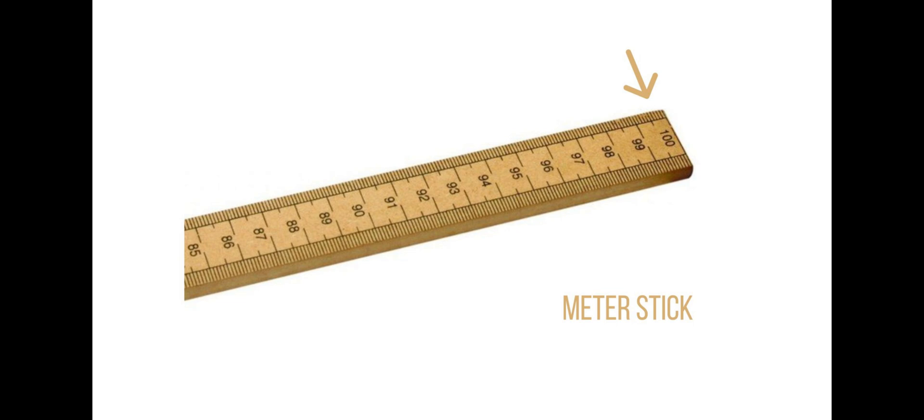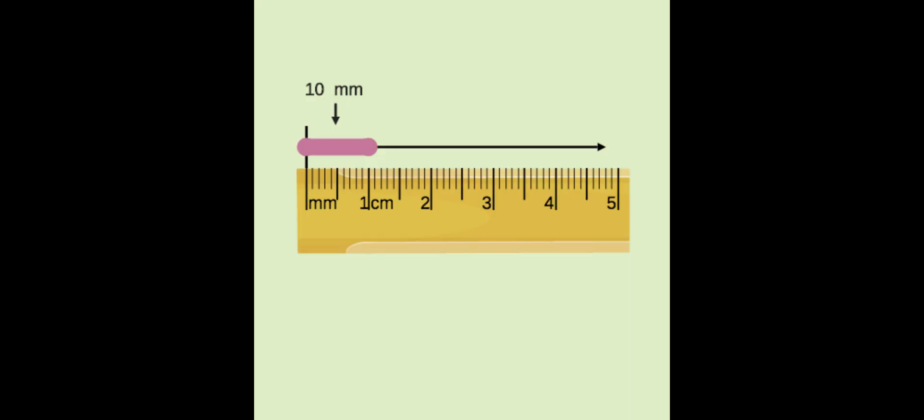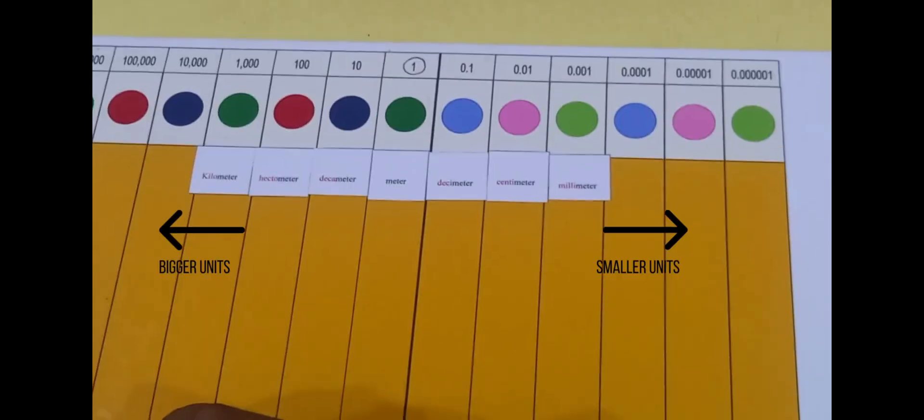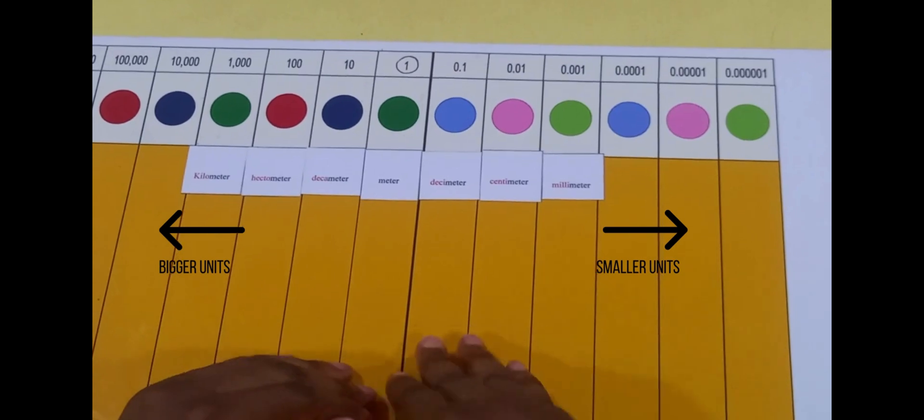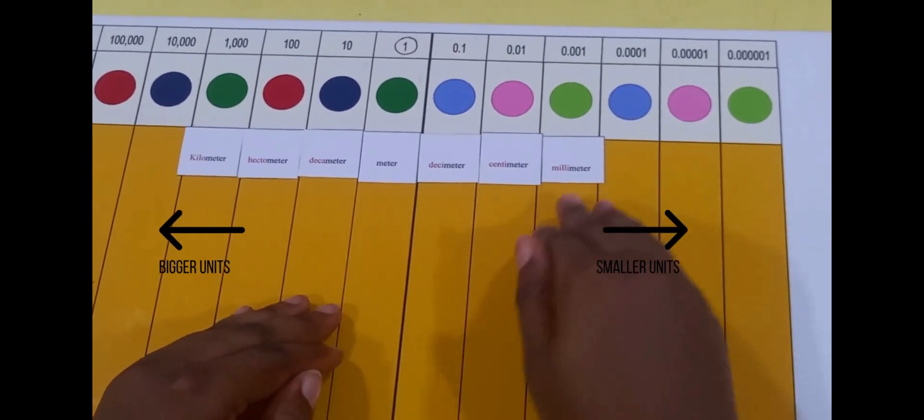This eventually led to the metric system of measurement, which brought about the calibration of the meter stick into smaller units and bigger units to solve the problem of exactness or precision in measurement.